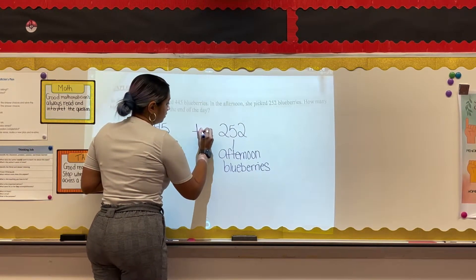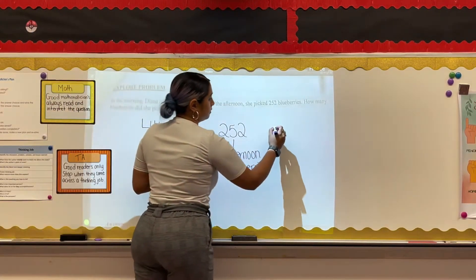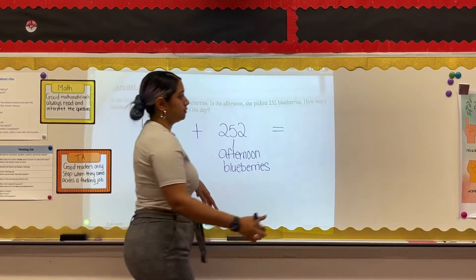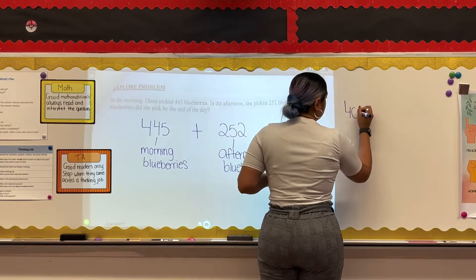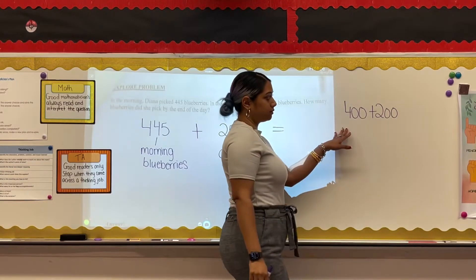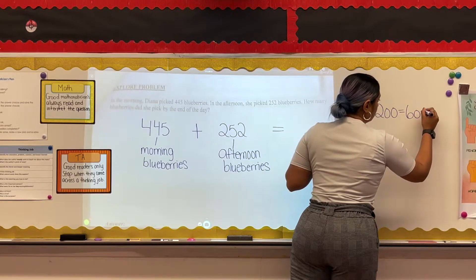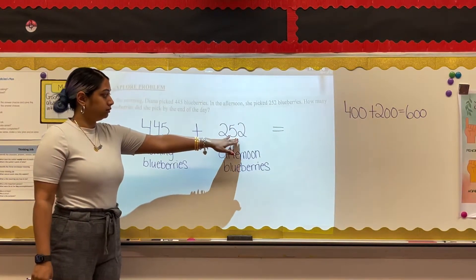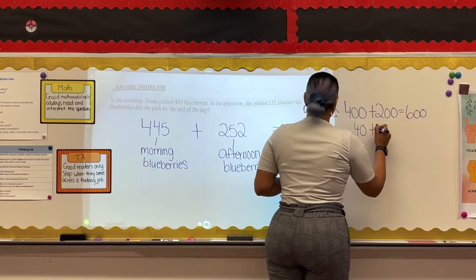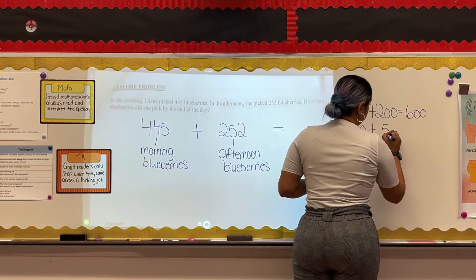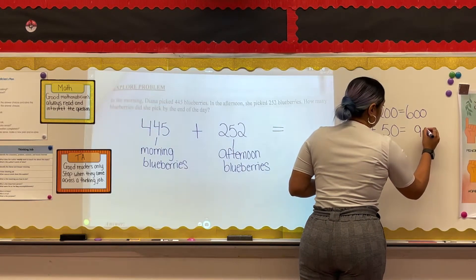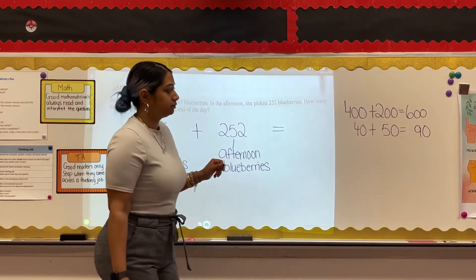Remember, the numbers you're adding together are called your addends. In order to add these numbers easily, I'm going to break each number up by place value. I'll take the 400 from the morning and 200 from the afternoon to make 400 plus 200. That gives me 600, because 4 and 2 in the hundreds place gives 6. Next, I'll add the tens of each number: 40 plus 50.